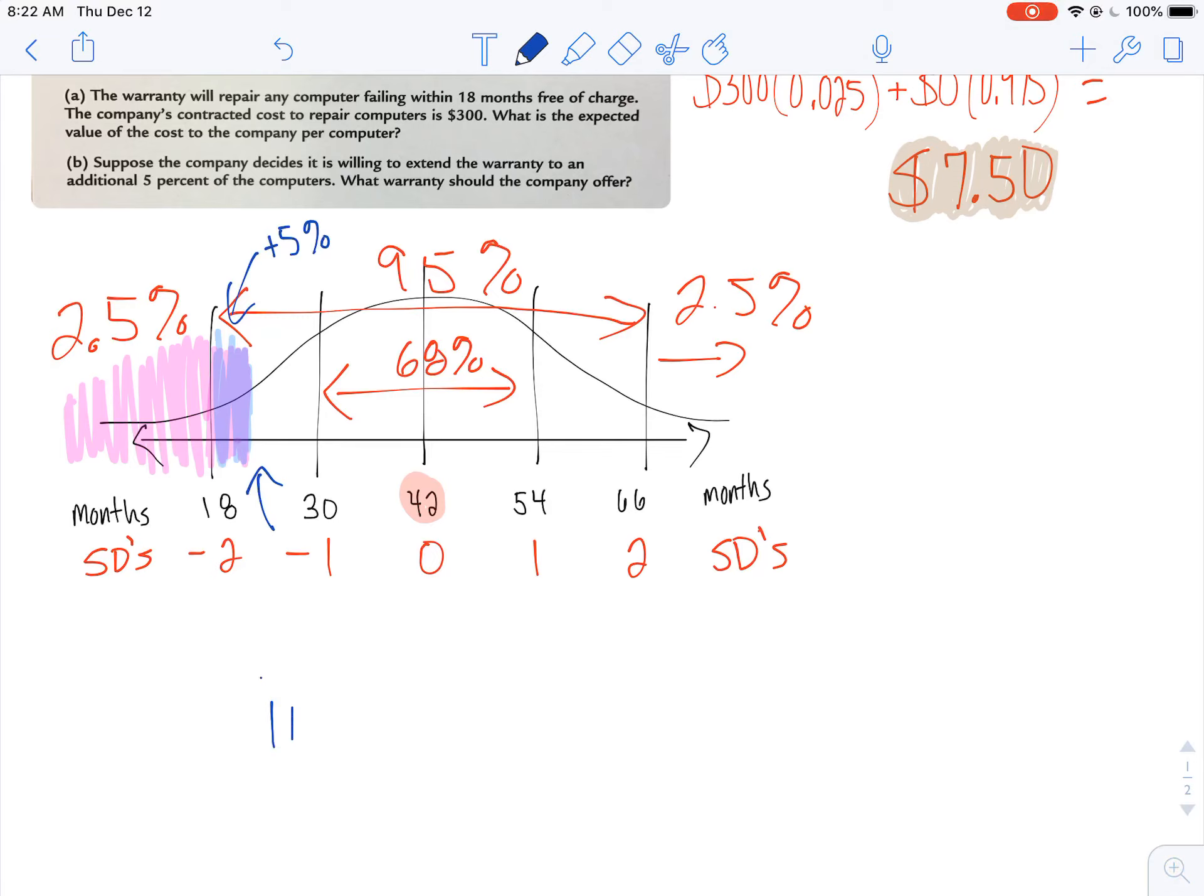So in order to do that, I can use inverse norm. Because I have my area, which is about 7.5%. I have my mean, 42. I have my standard deviation of 12.